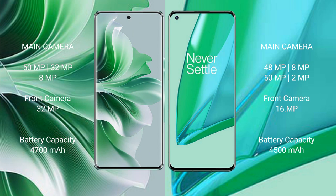Oppo Reno 11 Pro has a 4700mAh battery with 80W fast charging support. OnePlus 9 Pro has a 4500mAh battery with 65W fast charging support.